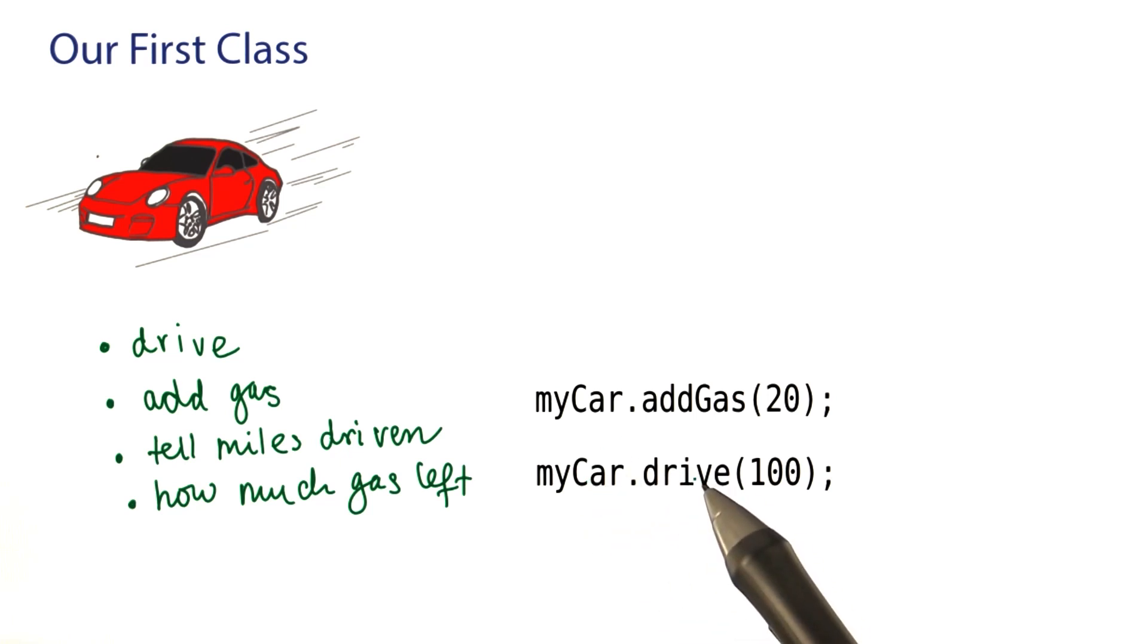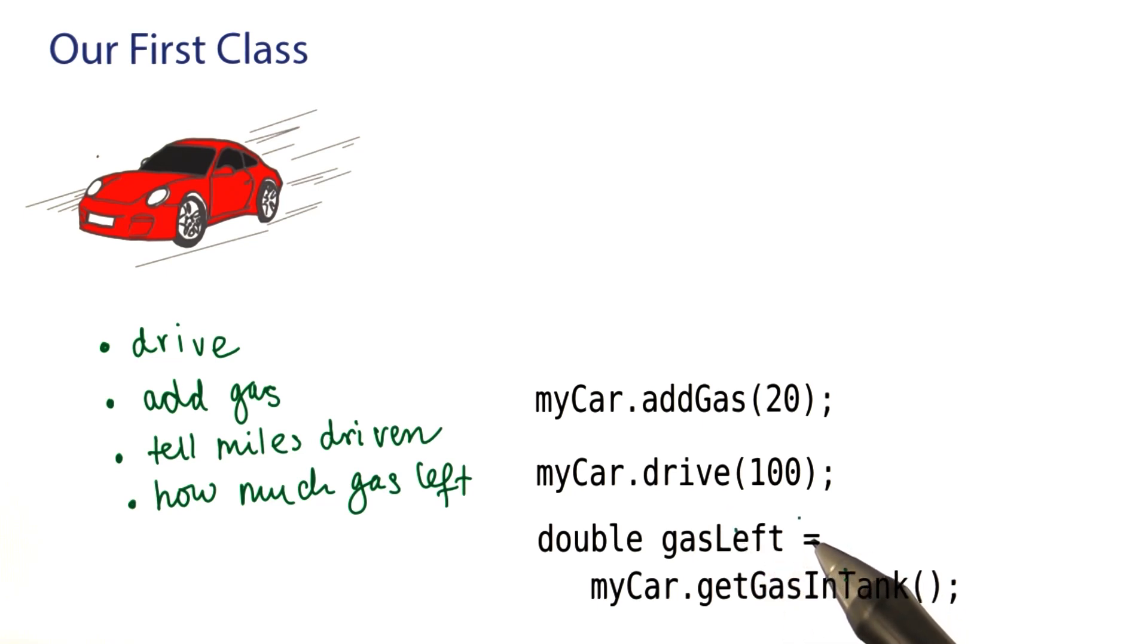And of course, one has to say for how long to drive. And here we say 100 miles. And then I might want to find out how much gas is left in the tank after that. So, I again use the my car object, invoke the get gas and tank method. It returns the gas level and I store that in a variable.